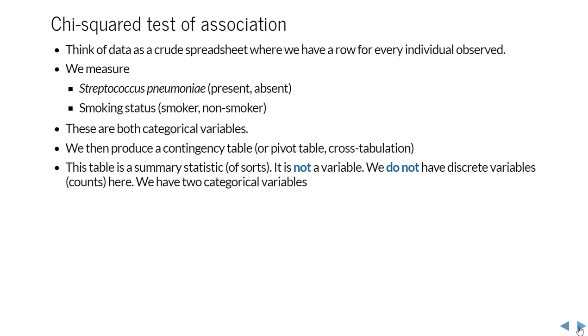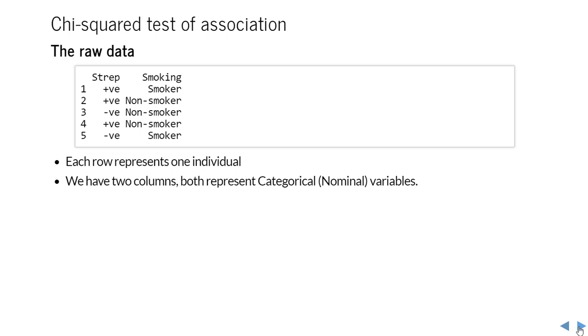Having got your raw data, you produce a contingency table, which is called a pivot table in Excel, cross-tabulation in other software. That table is a summary statistic—it's not a variable, and you shouldn't be thinking of the counts as discrete variables. What you have in your data are two columns of categorical variables which are the observations of each individual. To make that very clear, this is what raw data looks like for this scenario: each row is one individual, two columns, each representing a categorical, specifically a nominal variable.